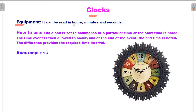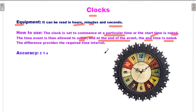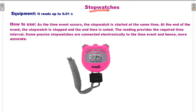The time event is then allowed to occur, and at the end of the event the end time is noted. The difference provides the required time interval. Accuracy is plus or minus one second. A stopwatch is accurate up to 0.01 seconds.